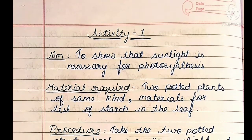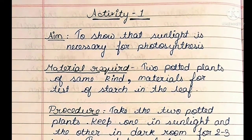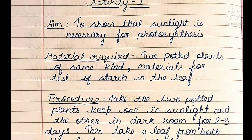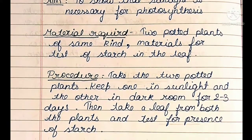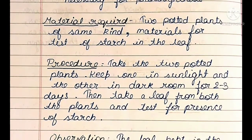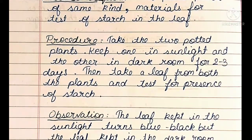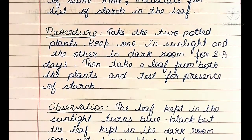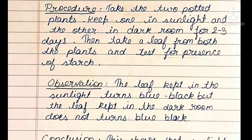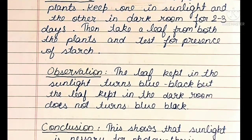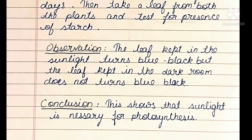Activity 1 — Aim: To show that sunlight is necessary for photosynthesis. Materials required: 2 potted plants of the same kind and materials for testing starch in the leaf. Procedure: Take 2 potted plants; keep one in sunlight and the other in a dark room for 2–3 days. Then take a leaf from both plants and test for the presence of starch. Observation: The leaf kept in sunlight turns blue-black, but the leaf kept in the dark room does not. Conclusion: This shows that sunlight is necessary for photosynthesis.